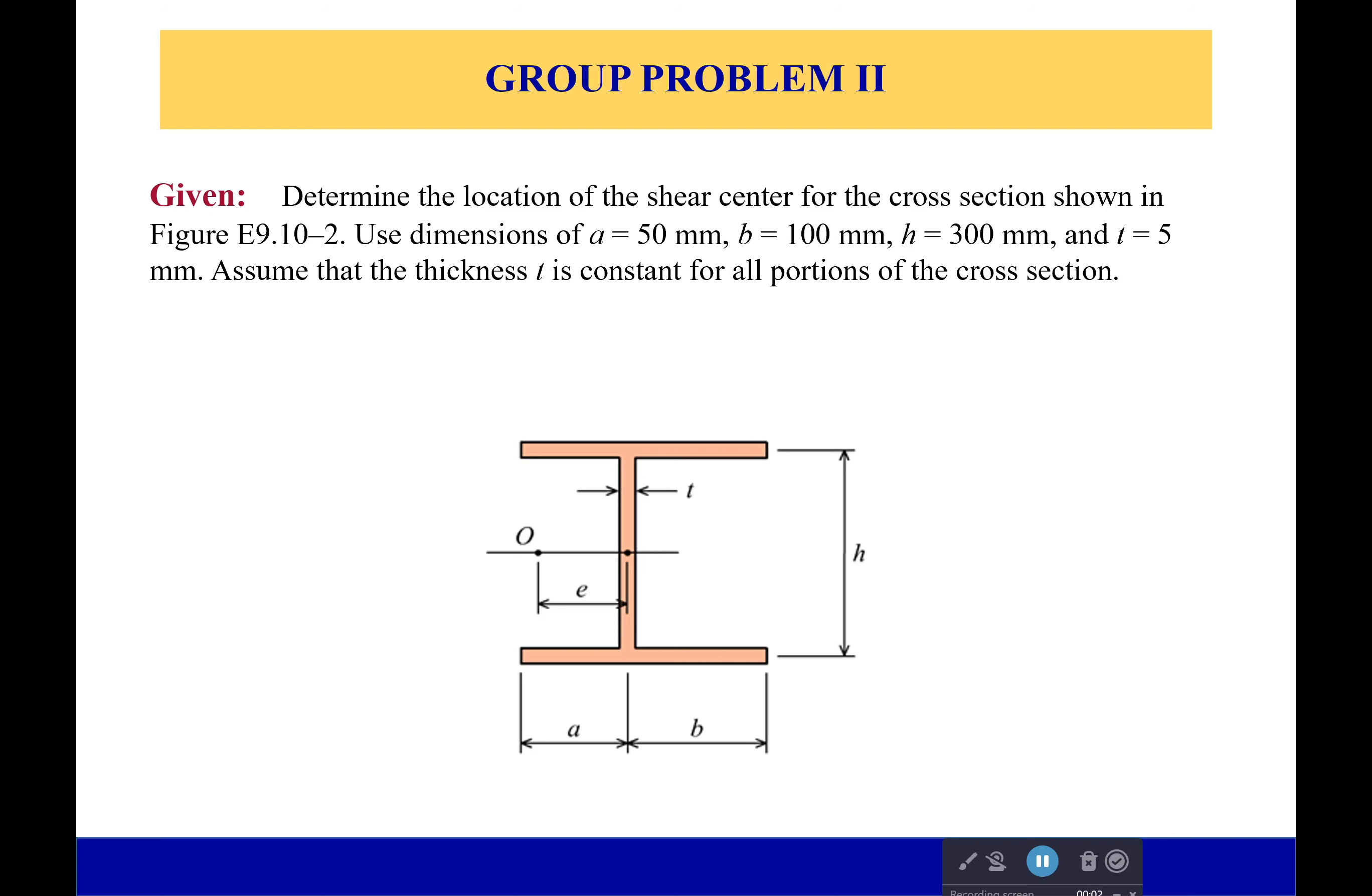Hi everyone, welcome back. So this time what we're doing, we're just trying to find the location of the shear center, measured from that point right there in the middle of our web. So we're finding the location of that shear center. Now dimensions are given to us. A is equal to 50 millimeters, B is 100, the height is 300, and the thickness is equal to 5 millimeters.